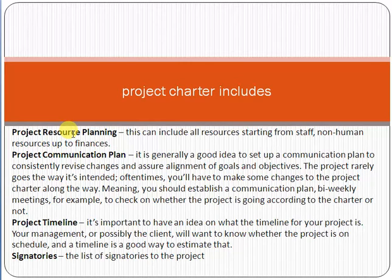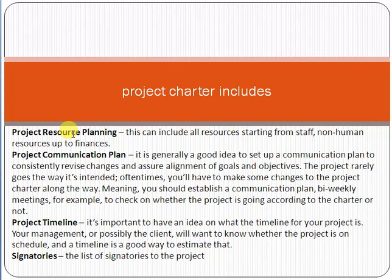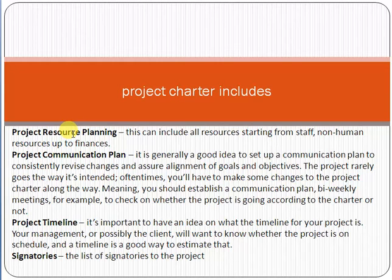The communication plan is also clearly mentioned, defining the communication hierarchy. For example, the project manager from the vendor side talks to the project manager on the customer side, the CTO from the customer side talks to the CTO on the vendor side, and functional managers communicate with their counterparts. The project timeline is also included — for example, the project should be completed within six months.